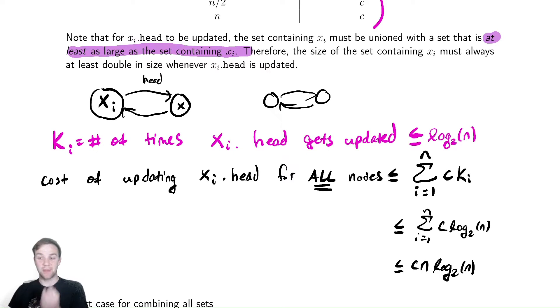Notice that that is a bound regardless of anything. If I wanted to combine everything into one large set, it would be bounded above by n log n for doing all of the unions for every single node. So if we can get a lower bound that's the same, then our amortized runtime will be quite good.